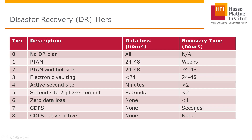There is a special configuration called the active-active configuration, which means in each and every data center the same applications are running. We have a load balancer in place where requests come in, and the load balancer decides which request goes to computer center 1 and which goes to computer center 2, based on where capacity is available. If a failure occurs, nothing happens at all because all the transactions can run on the still-available configuration. Active-active has no data loss and no recovery time, because it just runs on and on.